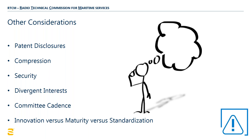Innovation versus maturity versus standardization — at what point do you consider the Indian satellites mature enough to standardize? It's an evolving, developing system. At what point are they mature enough, and at what point is the engineering innovation mature enough to be standardized? Those three are tied together and they're not easy to answer. Committee cadence is another challenge — Special Committee 104 has been in existence since 1984, almost 40 years, and that by itself introduces an expectation that things don't move rapidly. Special Committee 135, to solve the radio problem, wants to get a solution to market fast. So the cadence of 135 is much different than that of Special Committee 104.